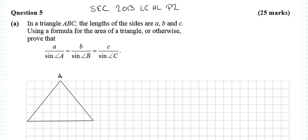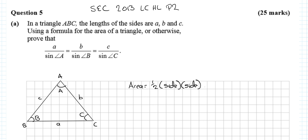Draw a triangle ABC with angles A, B, and C marked in — angles are always capitals, sides always small. What we know about this: the area of the triangle is equal to a half times a side multiplied by a side multiplied by the sine of the angle between those two sides.